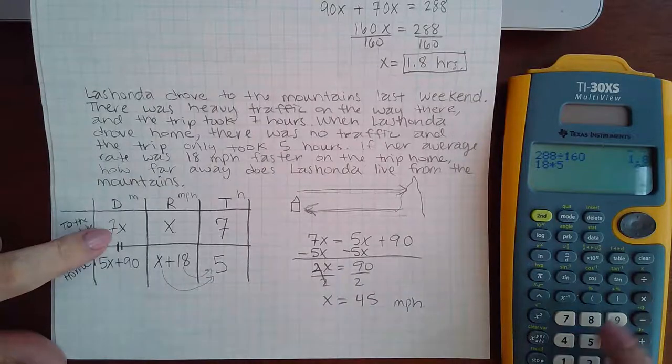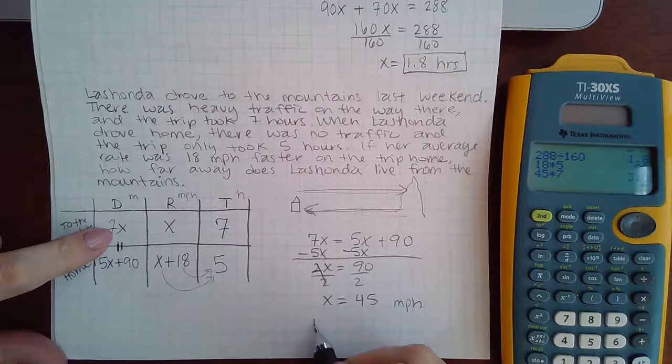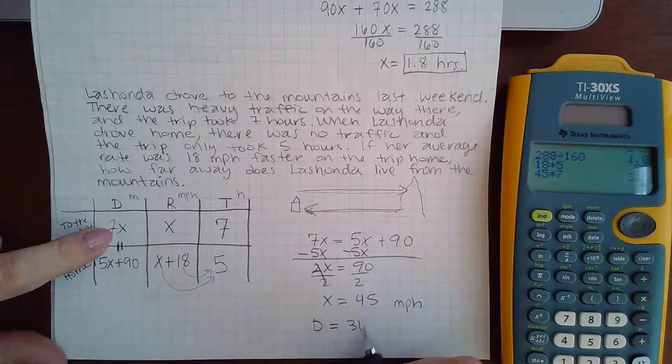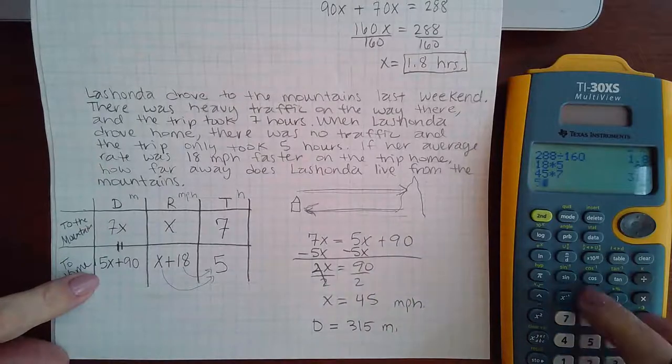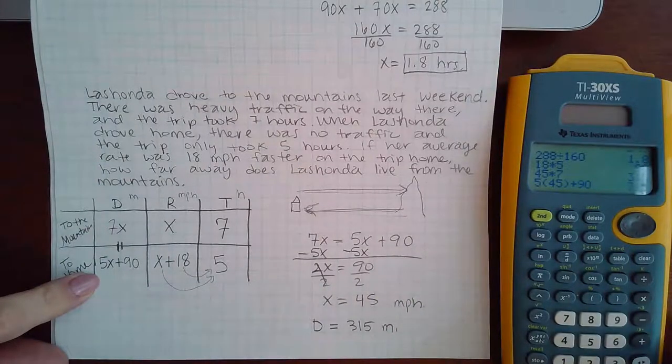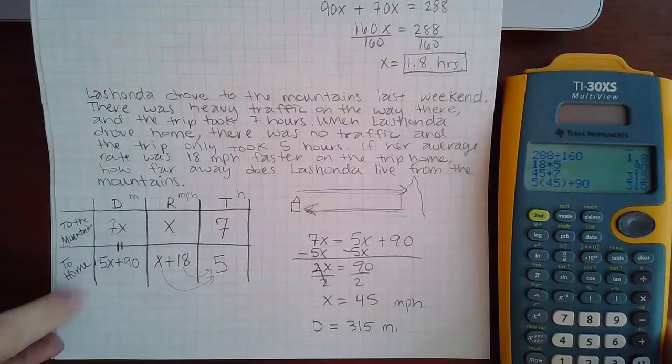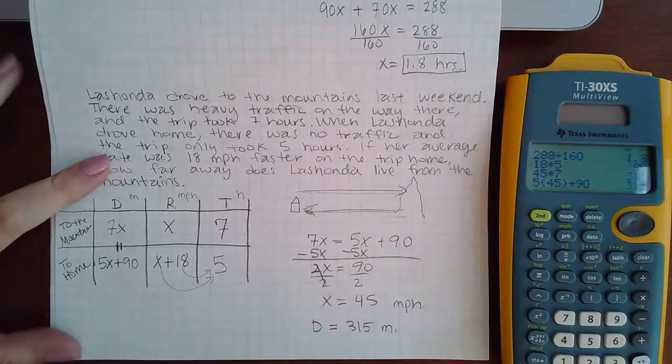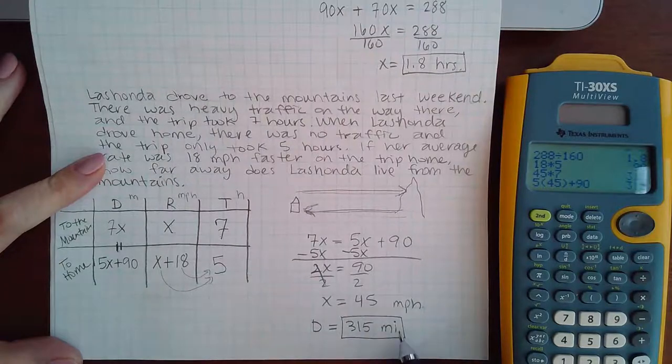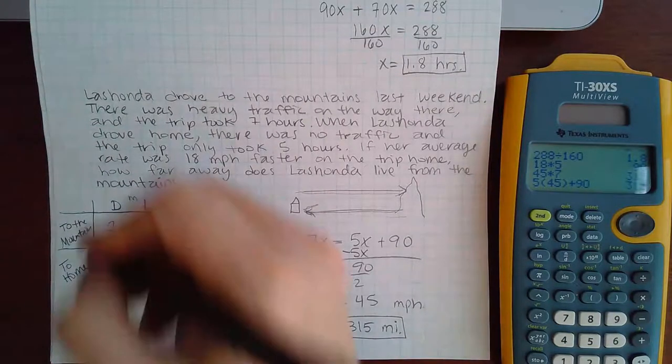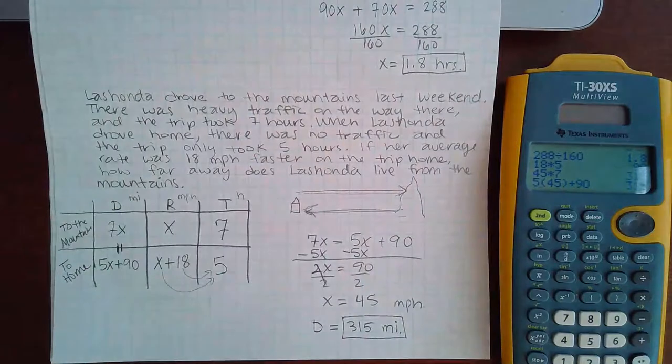So what I'm going to do is I'm going to take my 45 and I'm going to multiply it by 7. And the distance will equal 315 miles. Now notice if I would have put it into there, I would still get that same 315 miles. And so this is the answer that they want, not the 45 miles per hour. So you have to be careful.